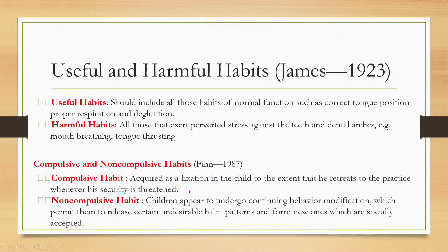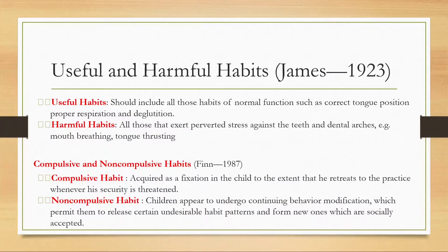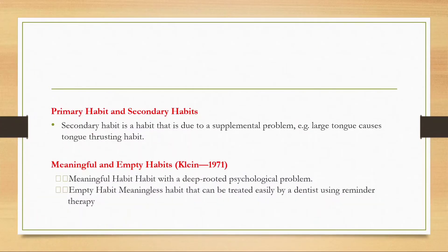Compulsive habits are acquired as a fixation — the child retreats to the practice whenever his security is threatened. Non-compulsive habits undergo continuing behavior modification, permitting the child to release certain undesirable habit patterns and form new ones which are socially accepted. Primary habits are normal habits, whereas secondary habits arise due to supplemental problems like a large tongue causing tongue thrusting.